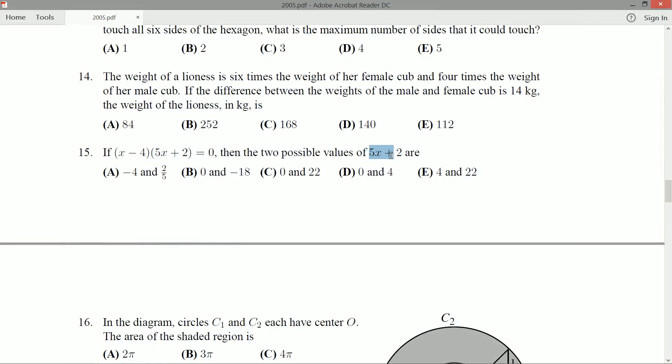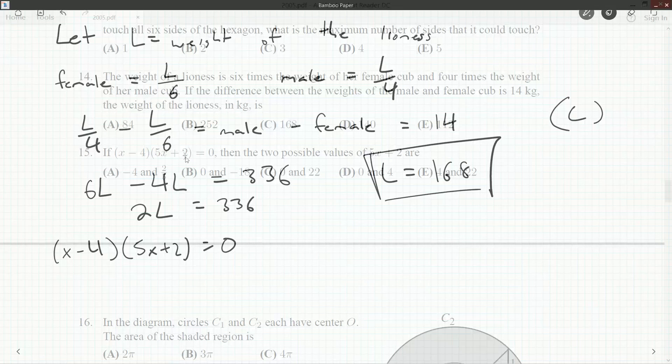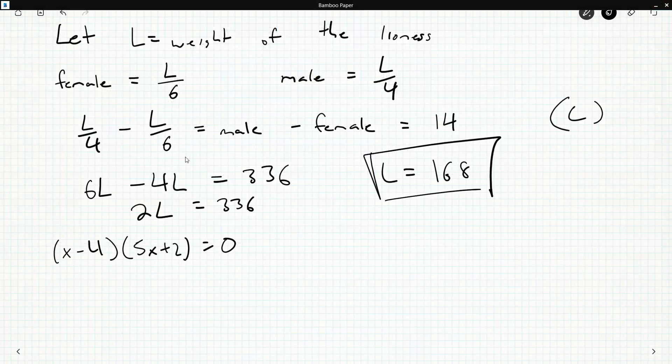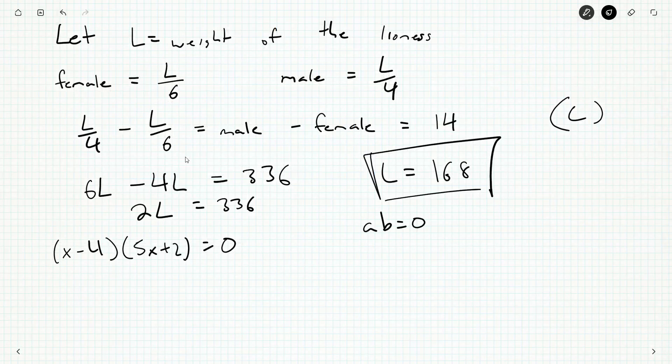Or you could make the connection that 5x+2 is one of the factors. So in order for a statement like this to be true, in fact, for any a times b equals 0, you either have a is 0 or you have b is 0, possibly both. So this tells us x-4 is 0, or 5x+2 is 0. So one of the values for 5x+2 has got to be 0.